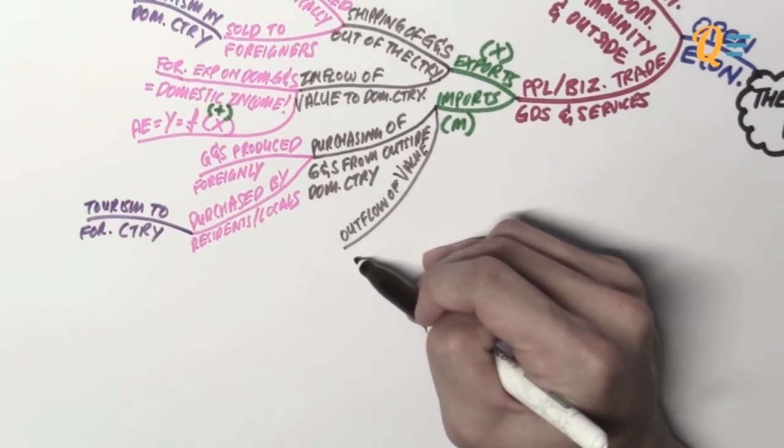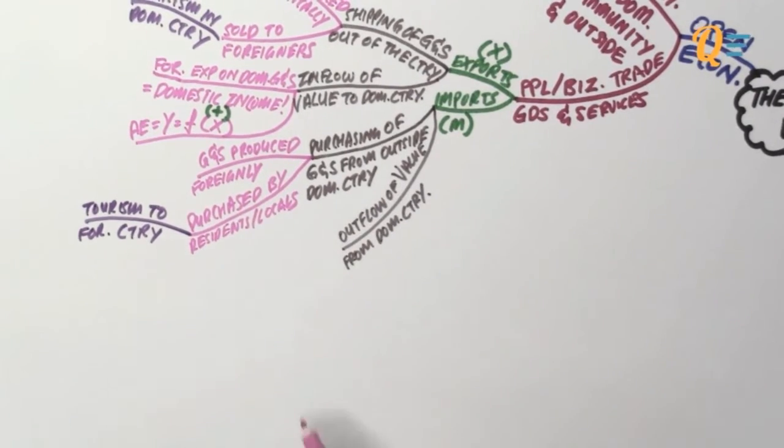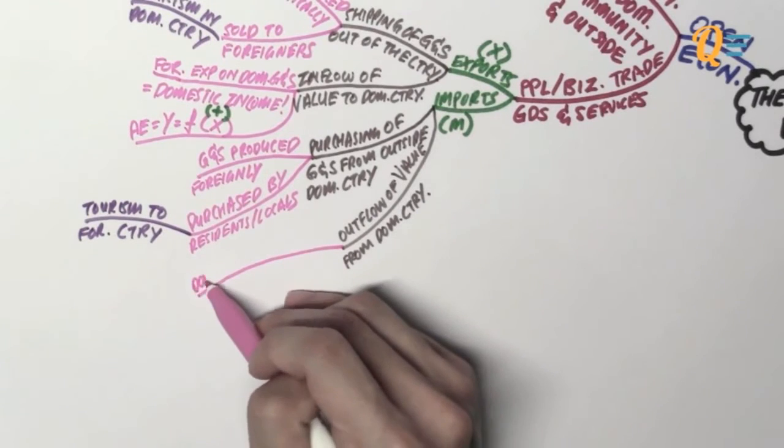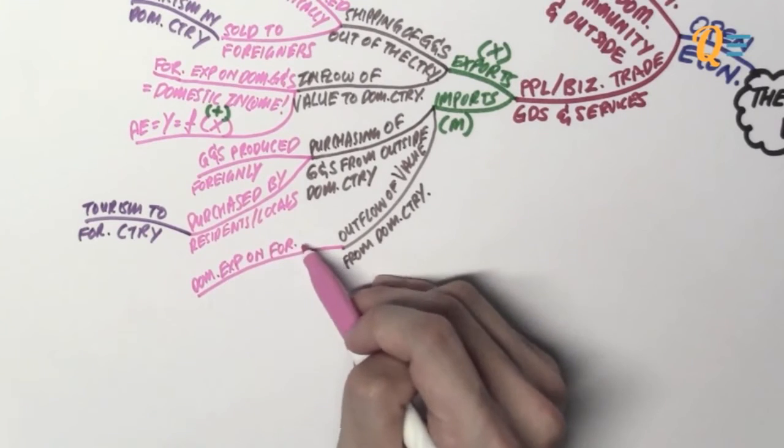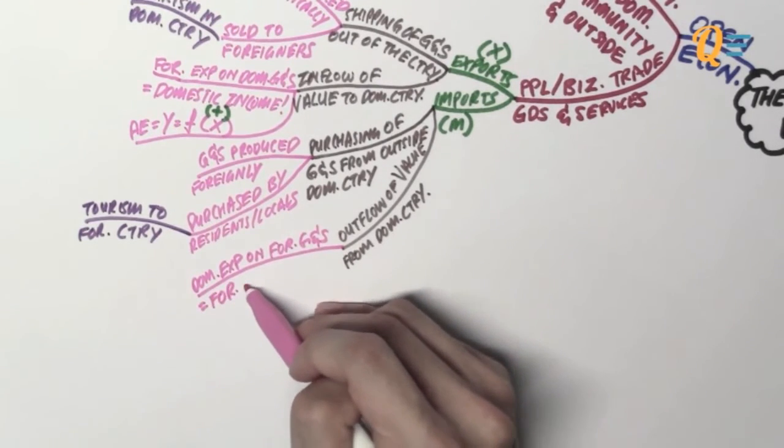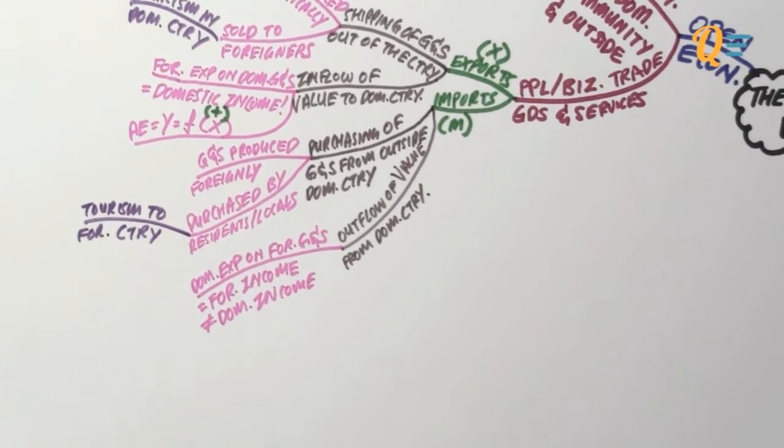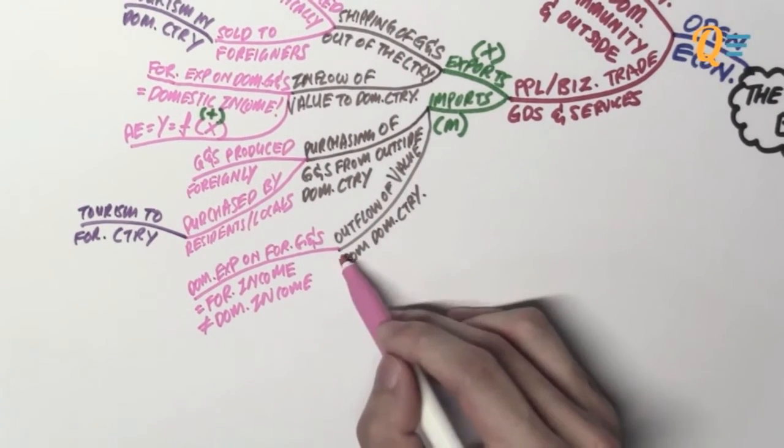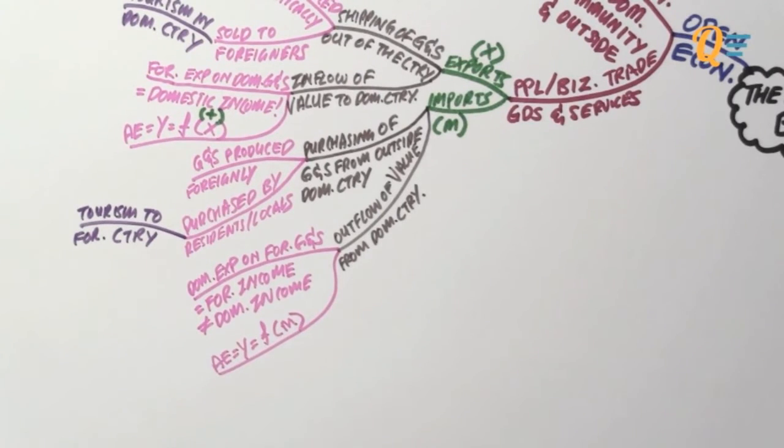And imports are actually outflows of economic value from the domestic country to a foreign country. And the reason for this is because any domestic expenditure on foreign goods and services is actually income to the foreign country. It is the foreigners that created these goods and services. Therefore, if anybody were to buy them, it is income to the foreign country. It is not domestic income. And that is why there is actually a negative relationship between imports and your aggregate expenditure and GDP.